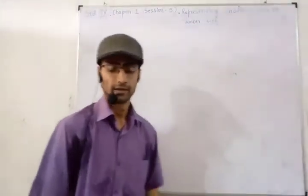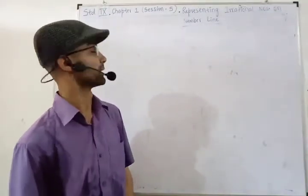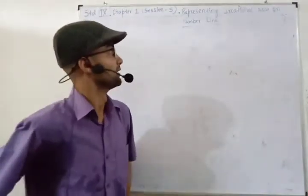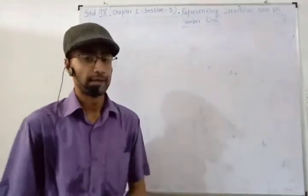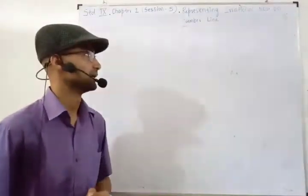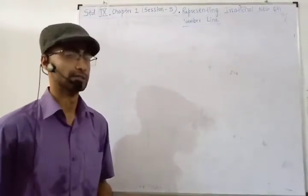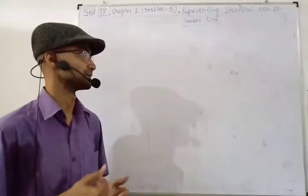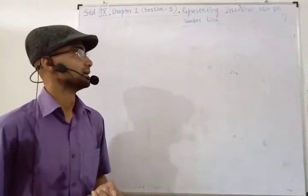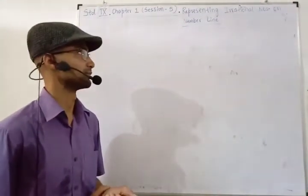Hello, thanks. This is the fifth video for Chapter 1 of Australian Land, Real Numbers. In the last video, I told you how we get rational numbers. We discussed addition, subtraction, multiplication, division, and some properties. I gave you two or three questions, and I hope you have done them.